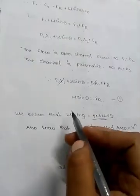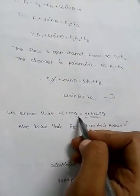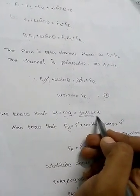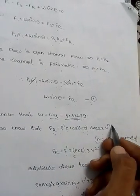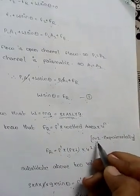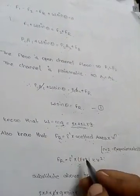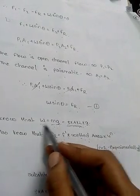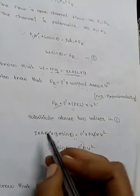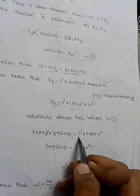W equals the weight. Here, the weight is given by rho times area times length times g. The frictional force formula involves f' times wetted area times v squared. The wetted area equals perimeter times length. Substituting these, we get: rho·g·sinθ equals f'·p·l·v².